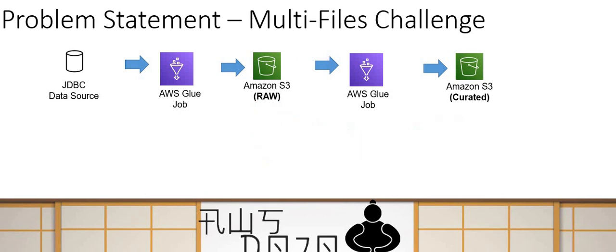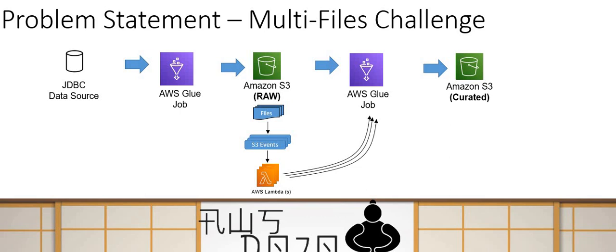But you face challenges the moment you are dealing with multiple files. Suppose this Glue job is extracting data from JDBC and loading to S3, and it writes three files — which is absolutely a common scenario, because depending on the file format or row-level partitioning you select, creation of multiple files is very common. You get three files in S3, which raises three S3 events, calls three Lambda functions, and triggers three Glue jobs that process those three files individually.